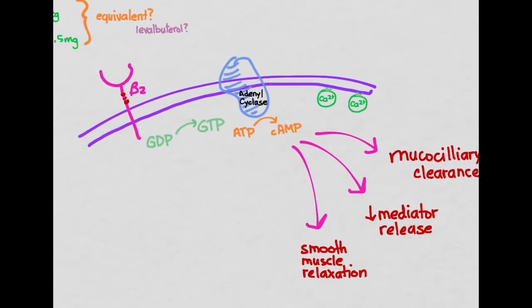Now if you want to know how this thing works, it's a beta-2 receptor, G-protein, cyclic AMP. And then it causes all of these things to happen, which are all the good things that we want to see.